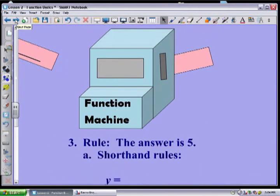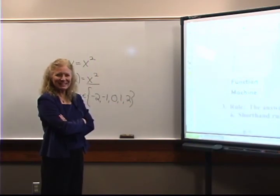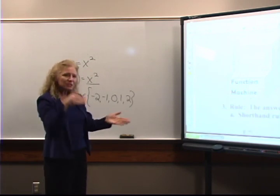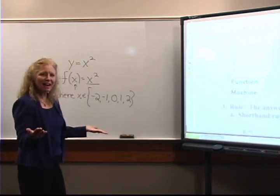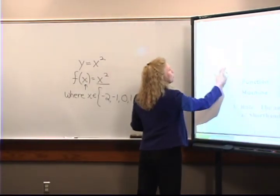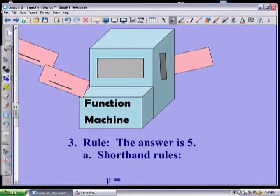Here's one that sometimes drives algebra students crazy. The answer is five. And you're like, what? That's my rule — the answer is five. You may think that complicates it, but it actually way simplifies it. So if I grab three and put it into my function machine, what am I going to get out? Five.